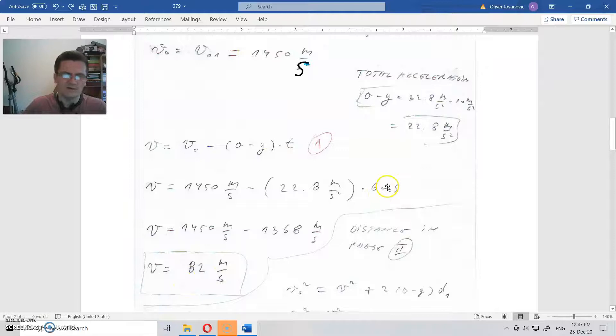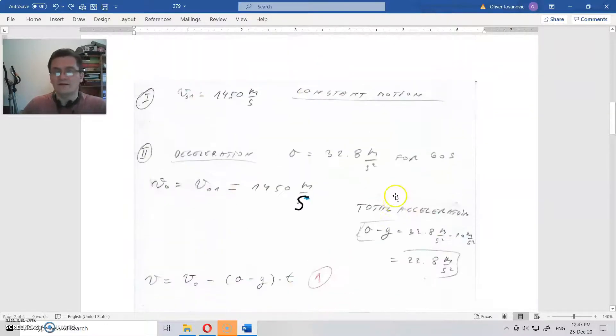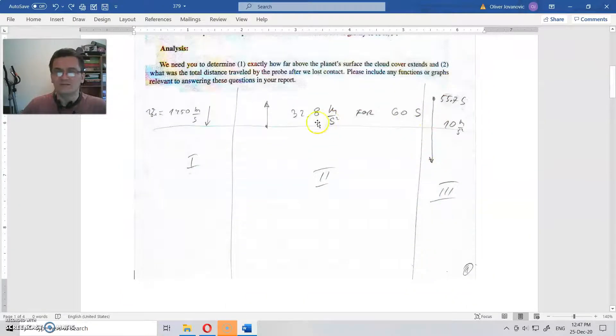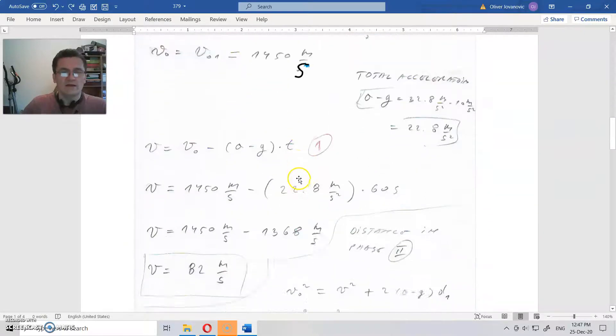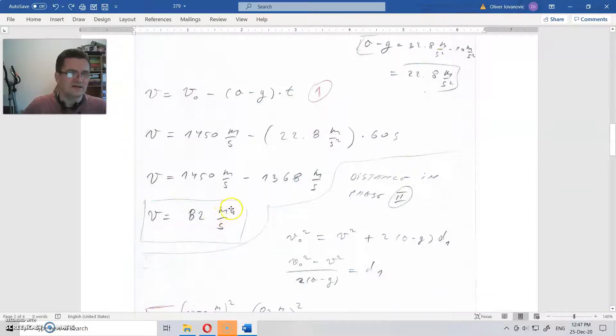If this here was, let's say, 80 seconds, this thing here would become greater than this one and we would get negative velocity. The meaning of that would be that the probe stopped at some point and started to move upwards. But that did not happen.